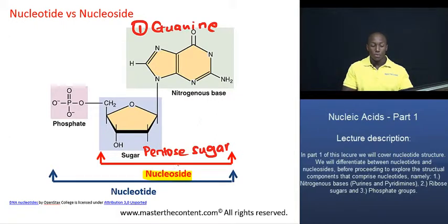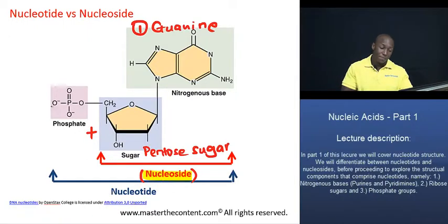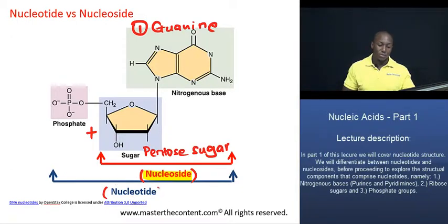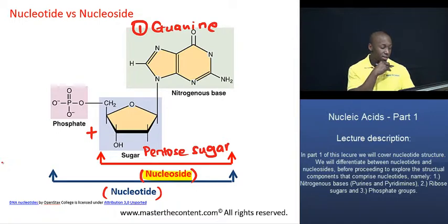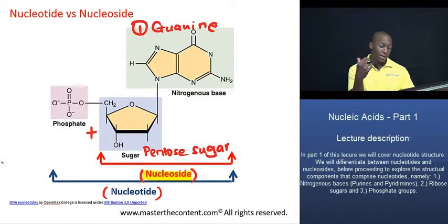so we refer to it as a pentose sugar. Those two components together — the sugar and the nitrogenous base — is what we refer to as the nucleoside. Now if we add a phosphate group to that structure, then we have what is referred to as a nucleotide. That's a pretty simple illustration that shows you the difference between a nucleoside and a nucleotide.